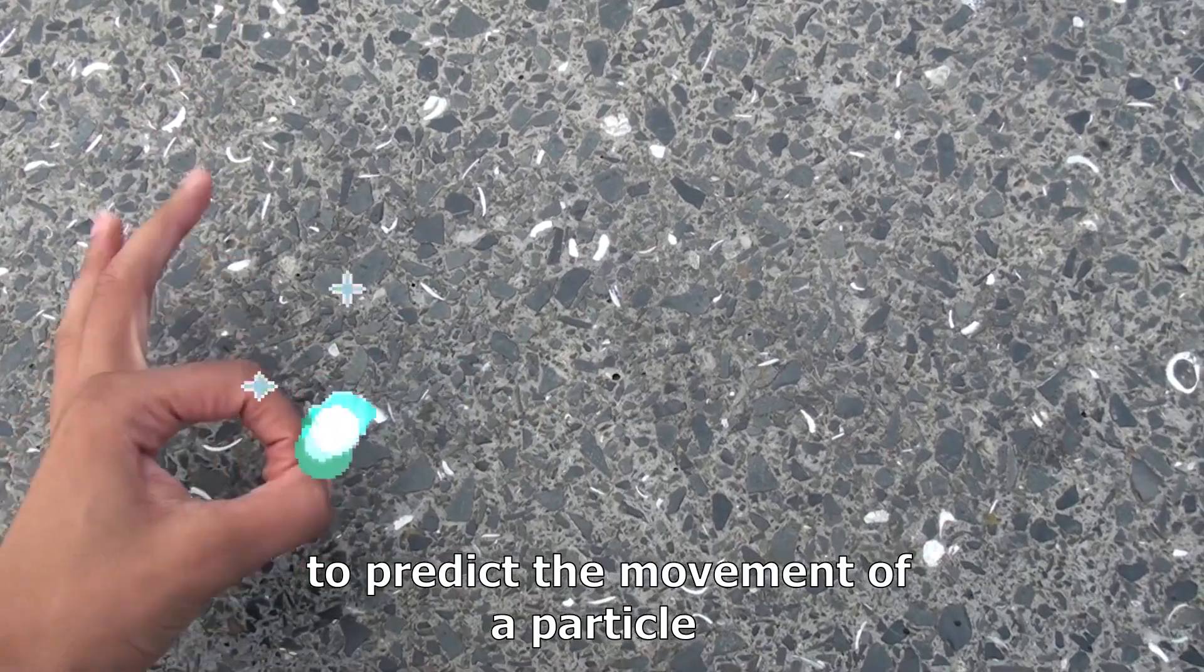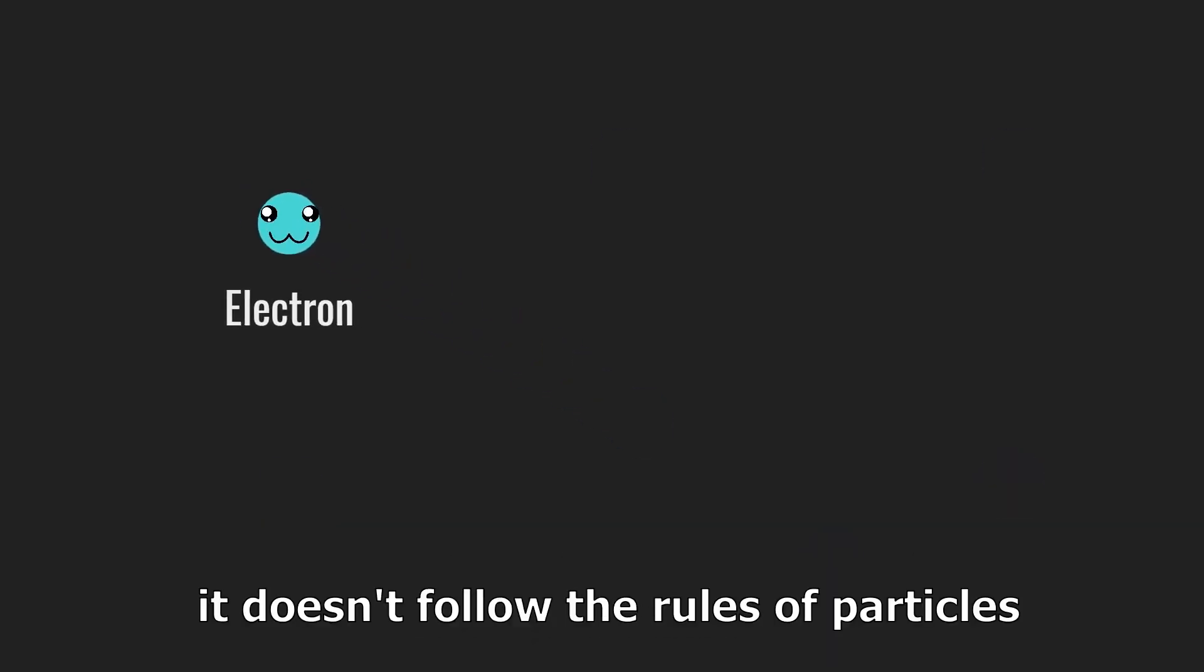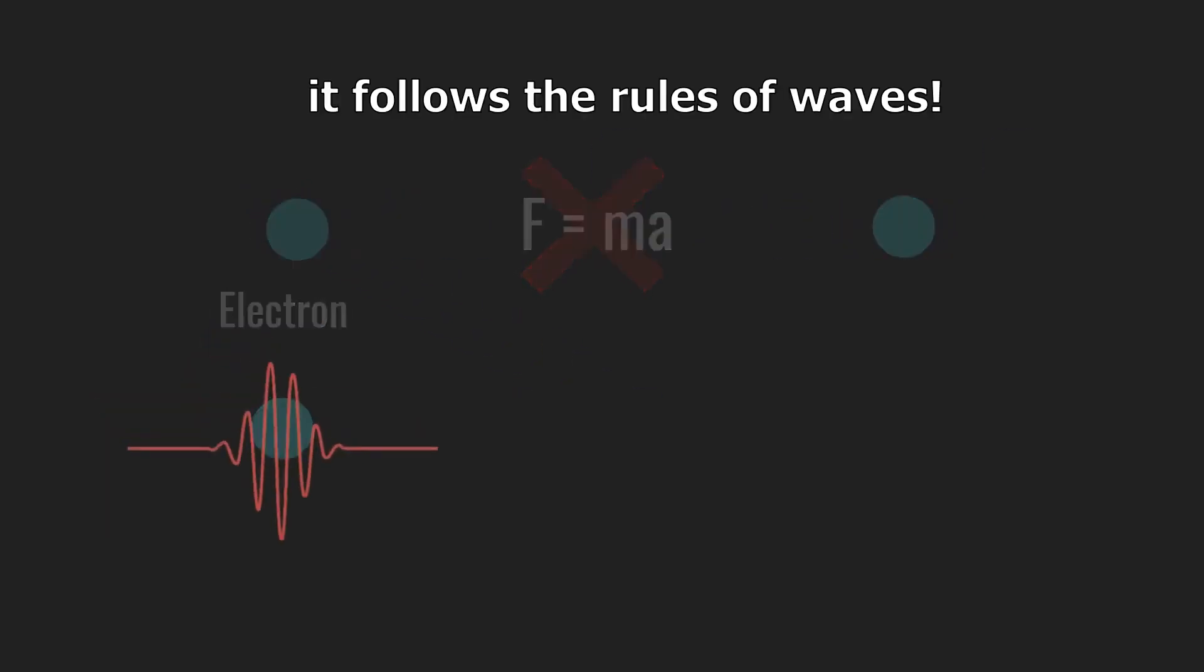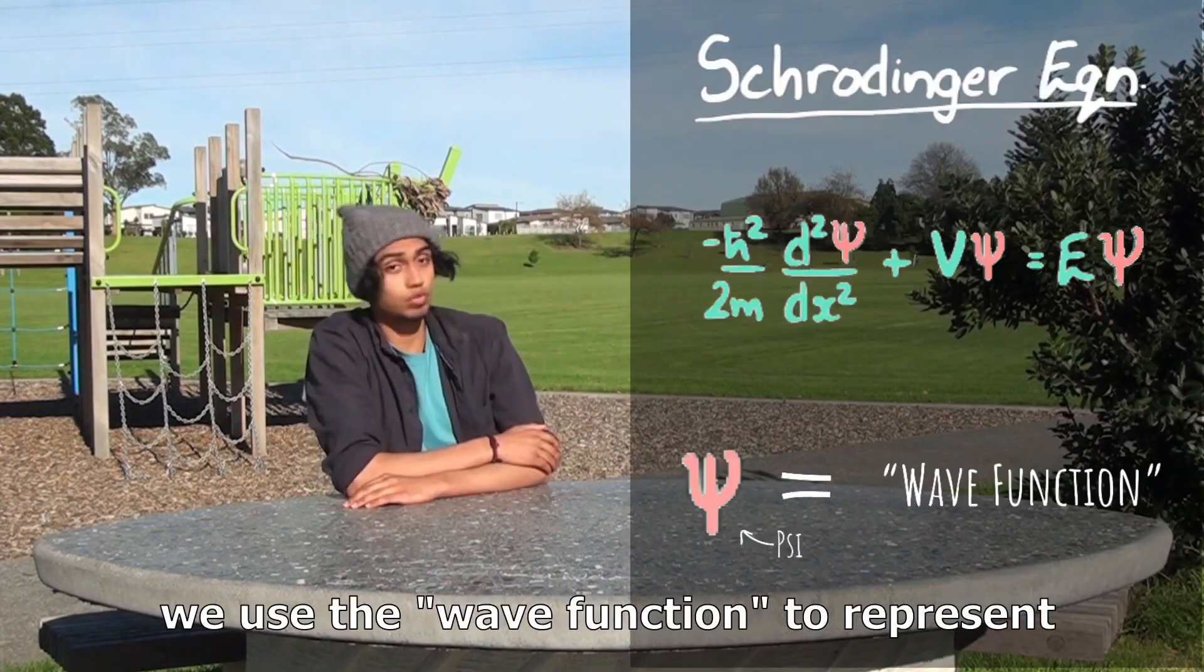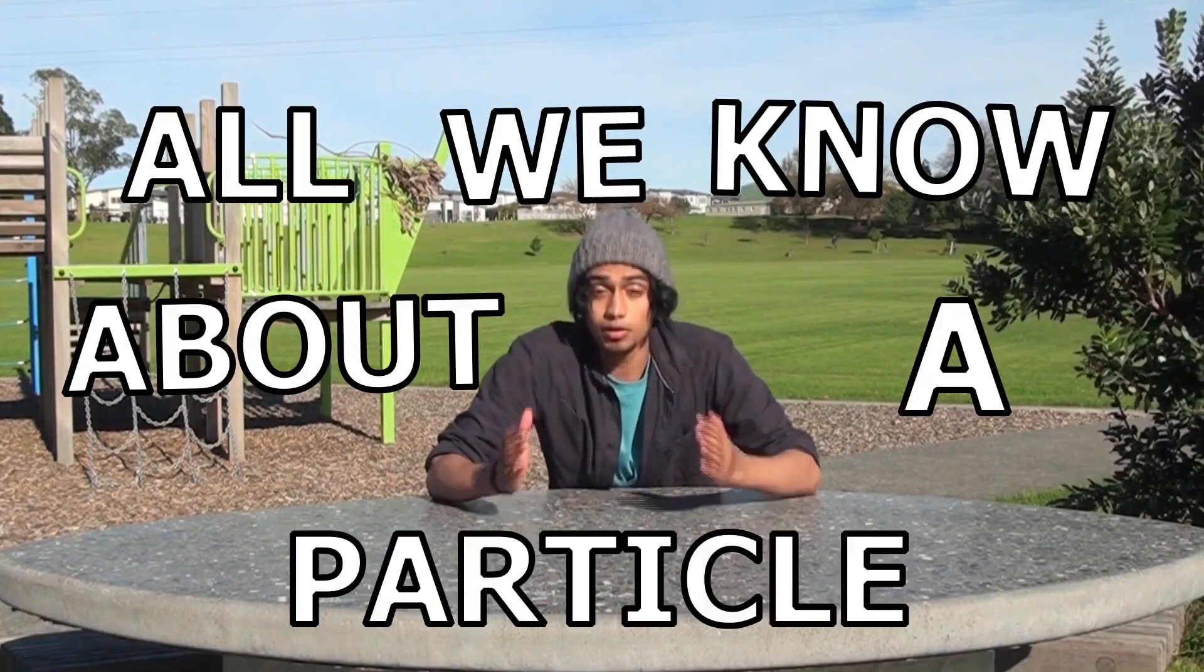in quantum physics, to predict the movement of a particle, like an electron, it doesn't follow the rules of particles, it follows the rules of waves. So in the Schrodinger equation, we use the wave function to represent all we know about a particle.